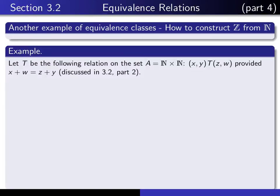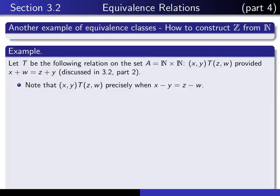This is an example of a relation that we looked at a couple of lectures ago. We call it T, and the underlying set is N cross N. We say that (x, y) is T-related to (z, w) provided x plus w equals z plus y. Notice that this is equivalent to x minus y equals z minus w — I just bring the y and the w over to the opposite side of the equation.